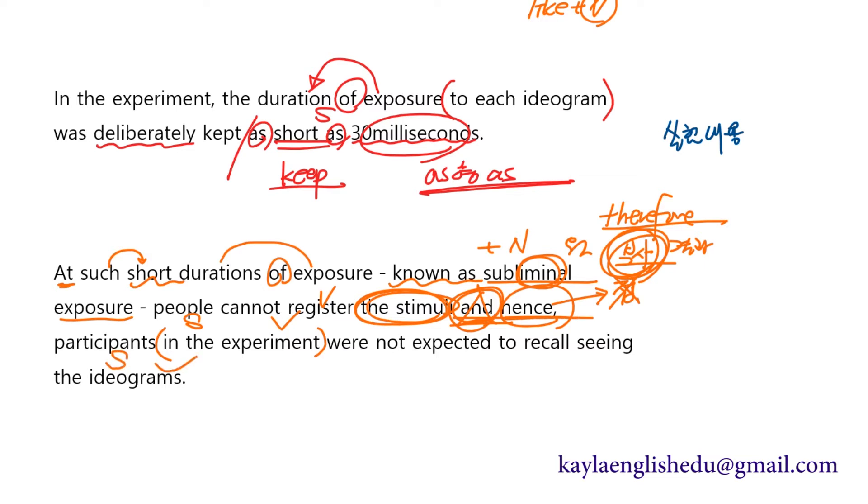participants in the experiment were not expected to recall seeing the ideograms. 참여자들은 실험의 참여자들은 be expected to 동사원형 할 것을 기대되다. 그런데 not이 있으니까 기대되지 않는다. recall 기억하는 게. seeing 본 것을. 그 ideogram 표현 문자를 본 것을 아예 기억하지 못할 거라고 기대된다. 결국은 굉장히 짧은 시간동안만 봤어요. 굉장히 short한 시간동안 Japanese Language에 나와있는 문자를 본 거잖아요. 그래서 사람들이 그 글자를 봤는지 안 봤는지도 기억하지 못한다.